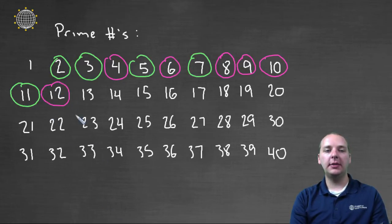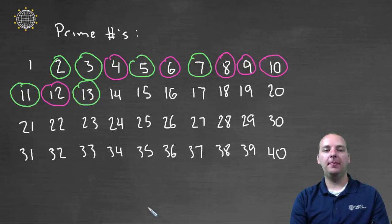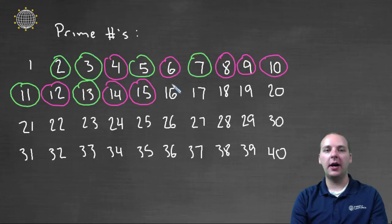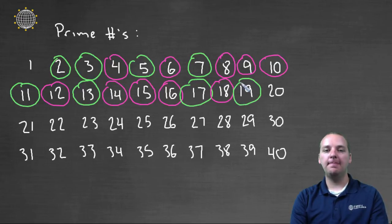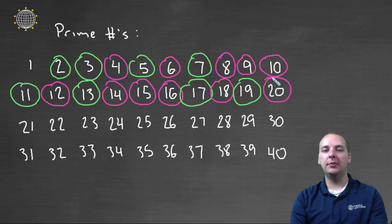Twelve is composite — two times six for example. Thirteen is prime. Fourteen is composite — two times seven. Fifteen is composite — three times five. Sixteen is composite — two times eight. Seventeen however is prime. Eighteen is composite — nine times two. Nineteen is prime. Twenty is composite, like two times ten. And actually I'm starting to see a shortcut here.